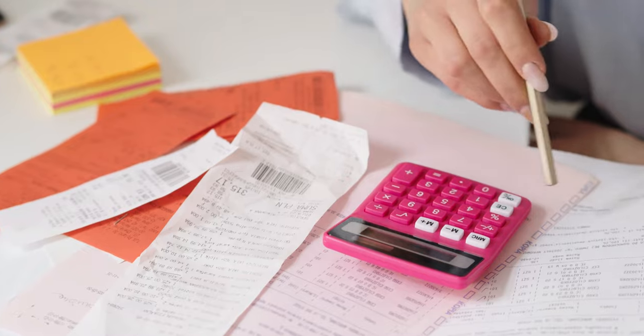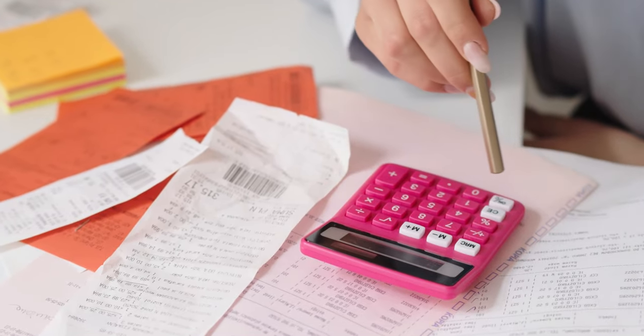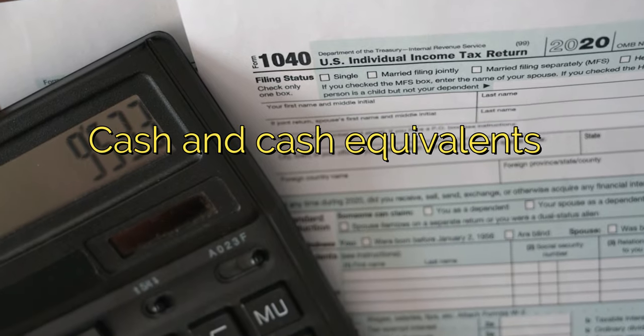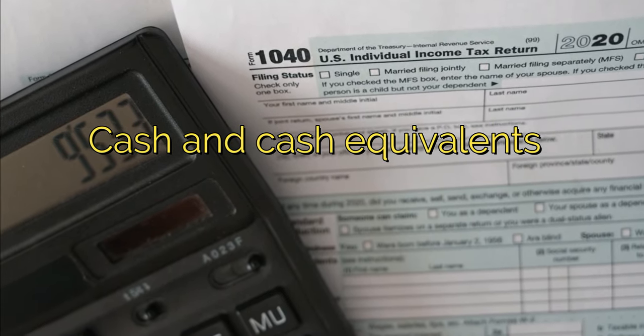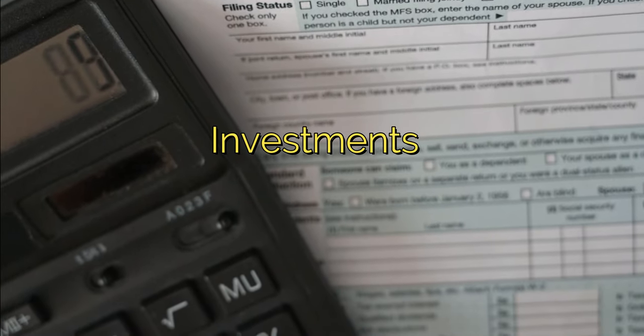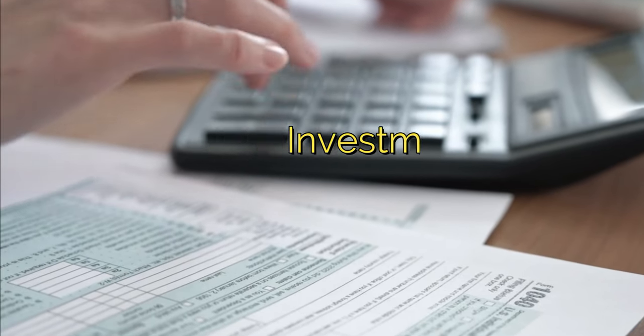Determine your assets. Start by listing all your assets, which are things you own that hold value. This includes cash and cash equivalents, savings accounts, checking accounts. Investments: stocks, bonds, mutual funds, retirement accounts.